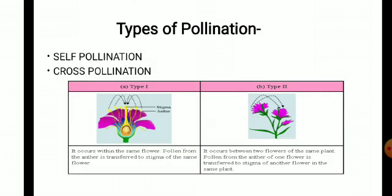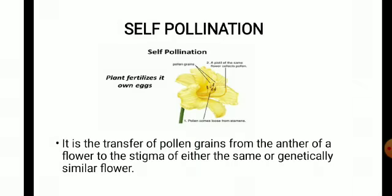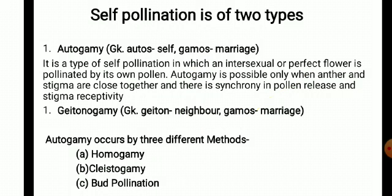There are two types of pollination: self-pollination and cross-pollination, as shown in the picture. If pollen grains from the same flower fall on the stigma of that same flower, it is self-pollination. If pollen grains from one flower fall on the stigma of another flower, it is cross-pollination. It is important to understand that in self-pollination the flower must be genetically similar; if the flower is genetically different, it will be defined as cross-pollination.